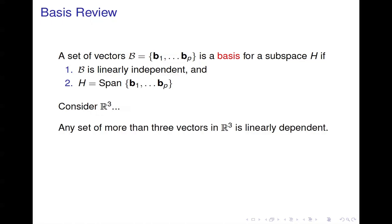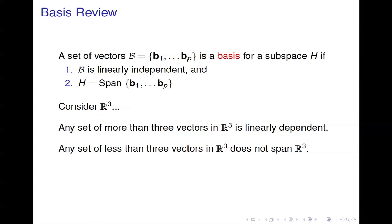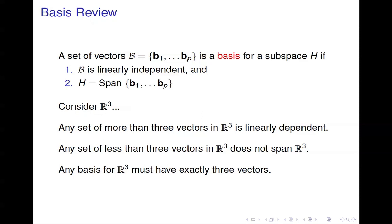Let's think about R3. If you have more than three vectors in R3, then they must be linearly dependent — if you put them in a matrix and put it in echelon form, you would have free variables. If you have less than three vectors, then they don't span R3. If you had only two, you wouldn't have a pivot position in every row. So you need at least three to span, and if you have more than three they're linearly dependent. That means any basis for R3 has to have exactly three vectors.